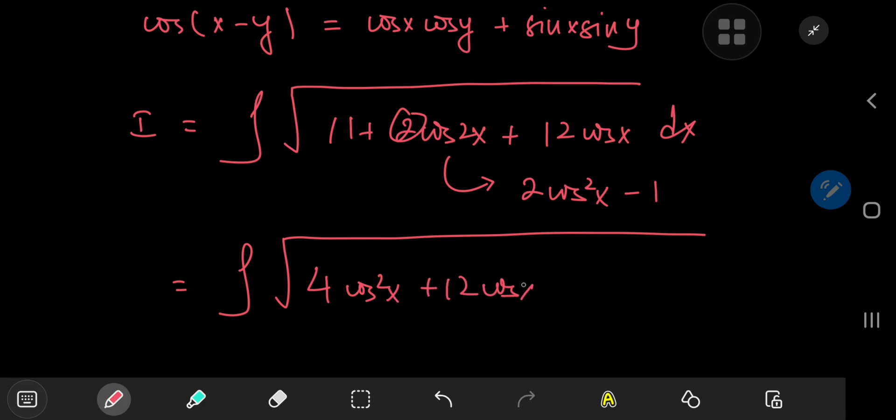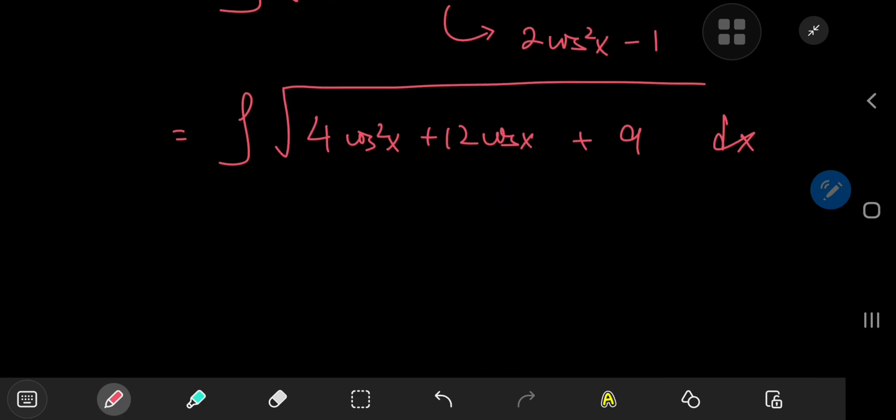Plus 12 times the cosine, plus 11 minus 2, which is 9. And all that's left now is to complete the square.